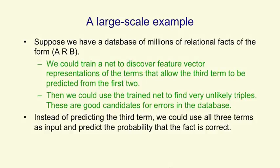So if the database contained information like Bach was born in 1902, the network could probably realize that was wrong because Bach is a much older kind of person and everything else he's related to is much older than 1902. Instead of using the first two terms to predict the third term, we could use the whole set of terms and predict the probability that the fact is correct. To train a net to do that, we'd need examples of correct facts and ask it to give a high output, and also a good source of incorrect facts and ask it to give a low output when told something false.